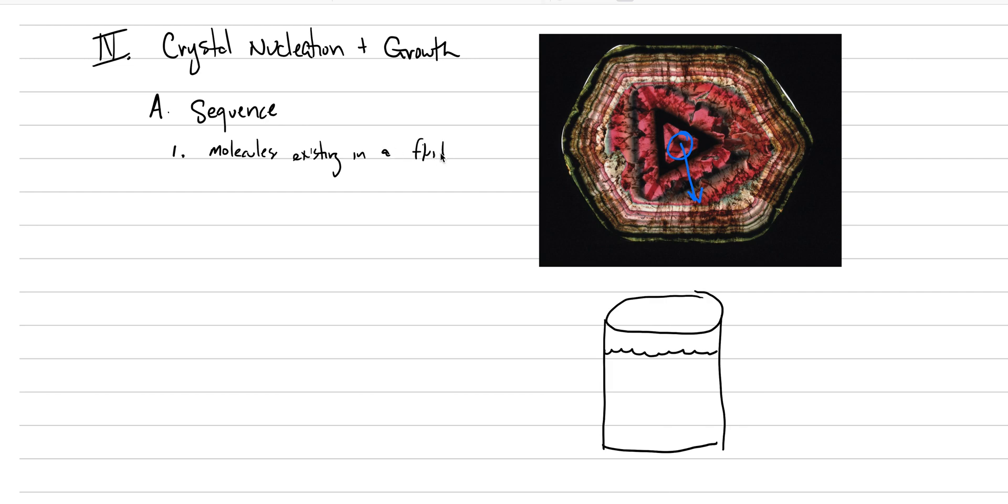If you want to write down some of those different geologic fluids, you can right here. And importantly, these molecules or atoms, maybe this is sodium and chloride for example that will come together to make salt, they are moving randomly throughout this fluid. So molecules exist in a fluid and they move randomly.